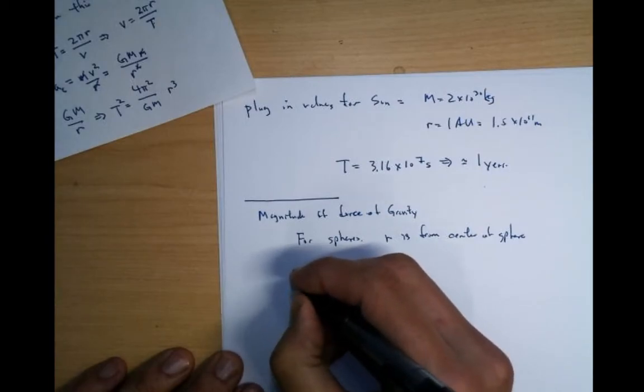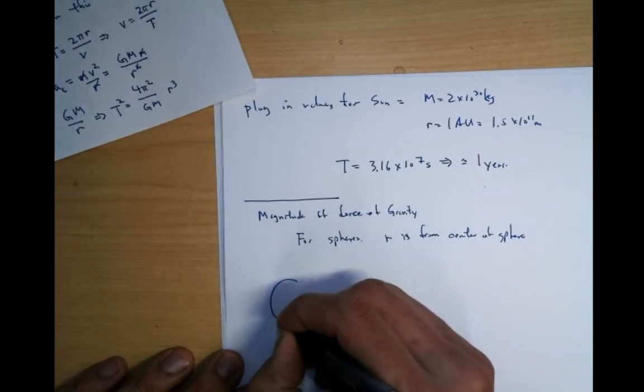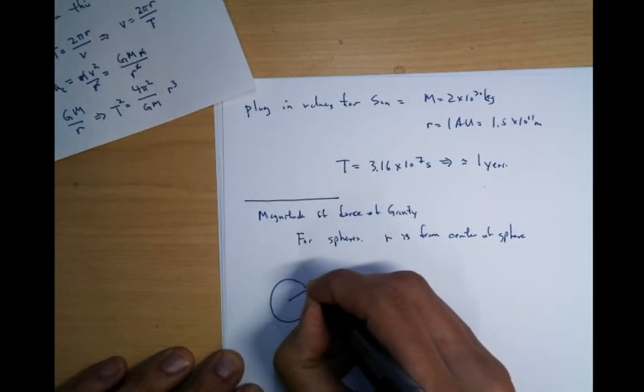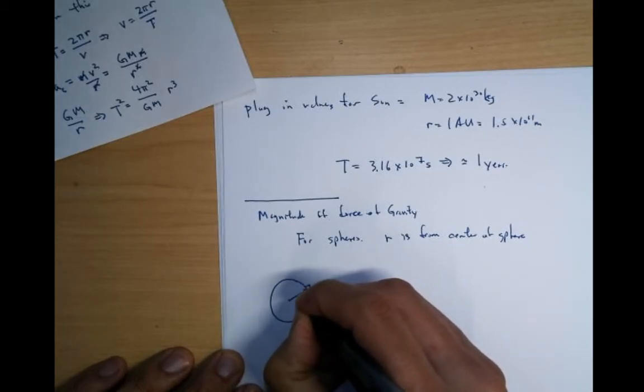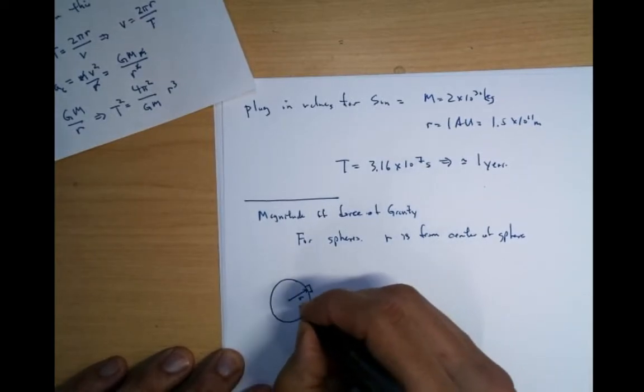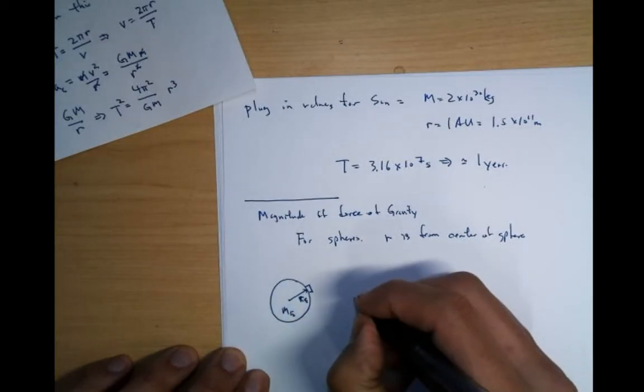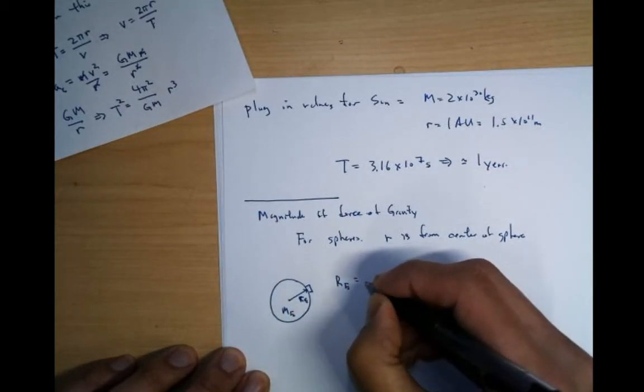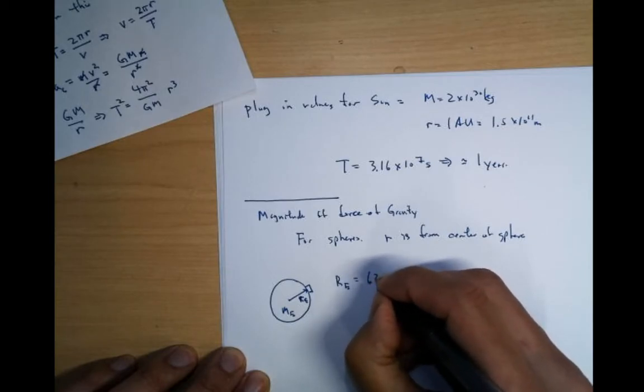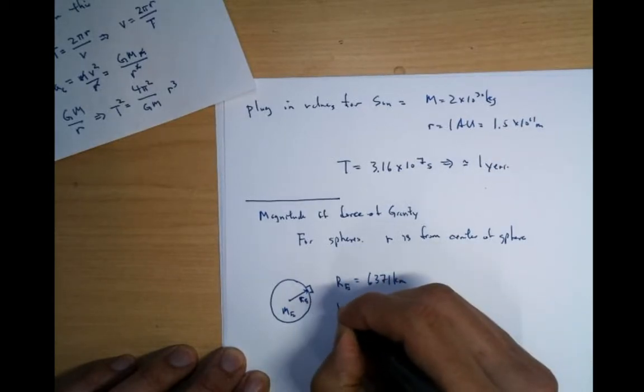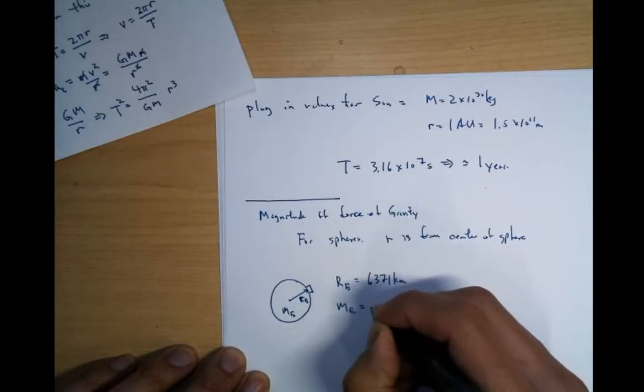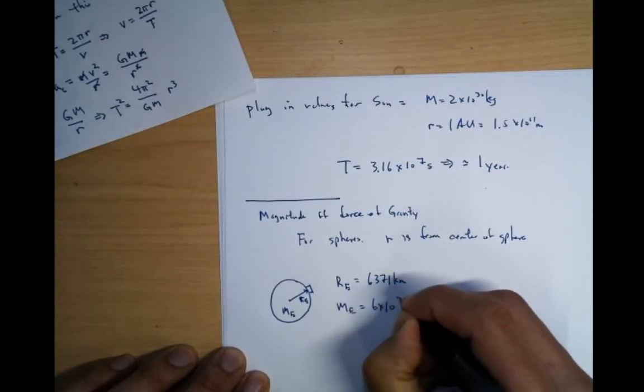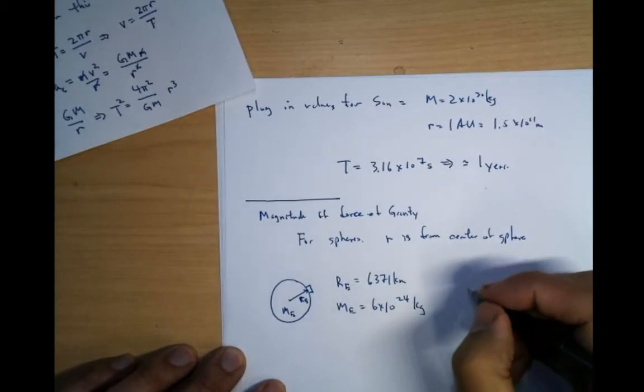So for instance, if you have the earth here, and on the surface of the earth, you put a mass there. There's a r. This is like the r e, for instance, the radius of the earth, the mass of the earth. r e is equal to 6,371 kilometers. The mass of the earth is equal to 6 times 10 to 24 kilograms.